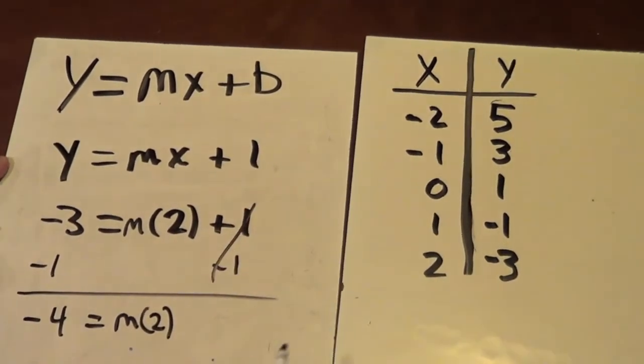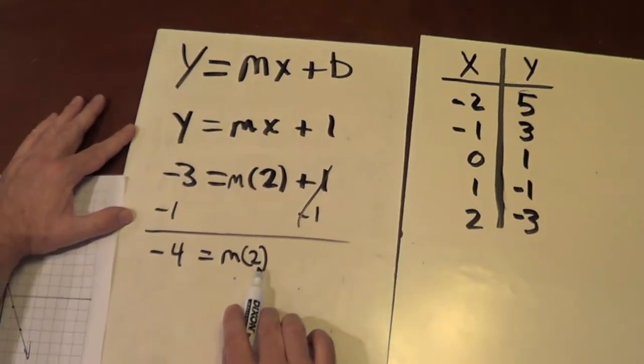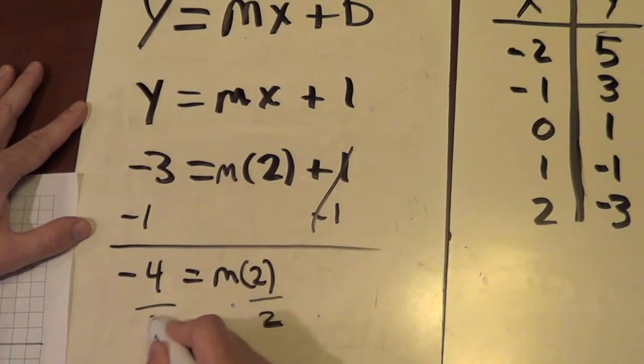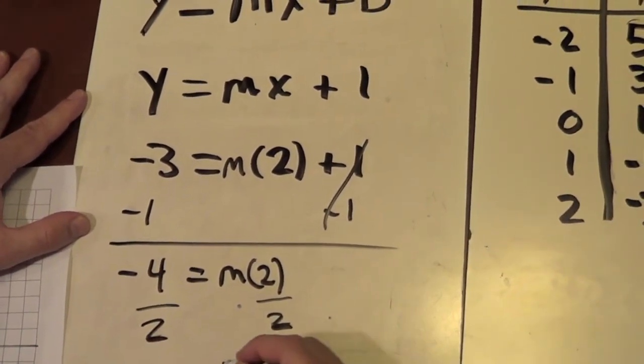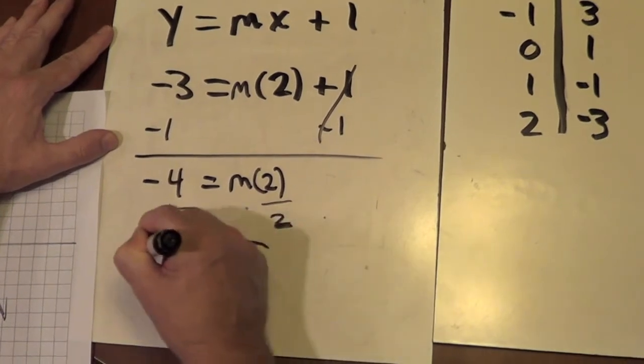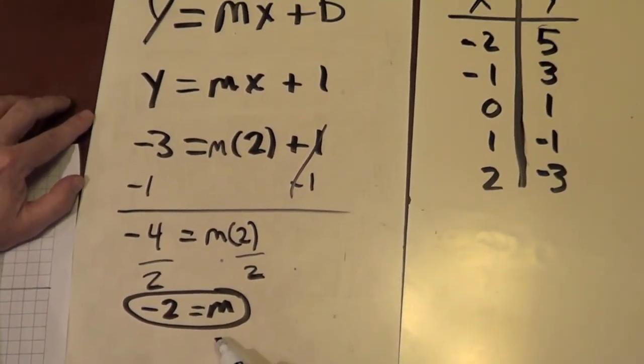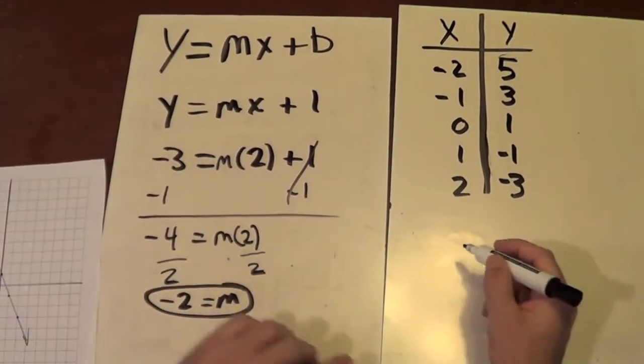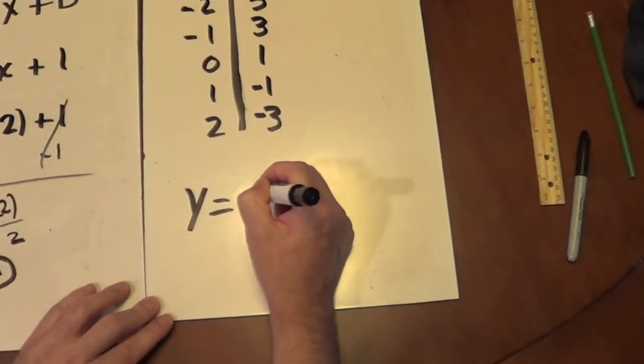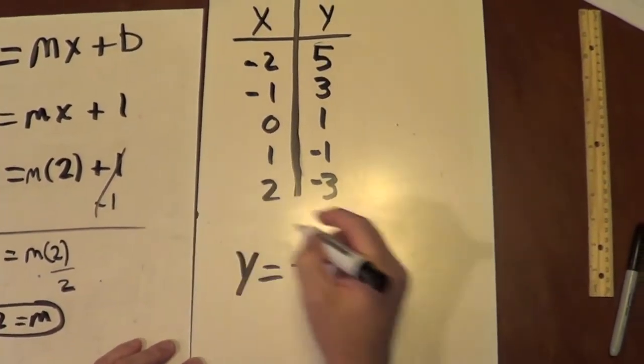So that's going to leave me with negative 4 equals m times 2. And 1's canceled. So now I have a simple multiplication equation. I'll divide both sides by 2. And I get m equals negative 2. So now I have my slope. And I can rewrite this. And I'll write it over here. Y equals negative 2x plus 1.